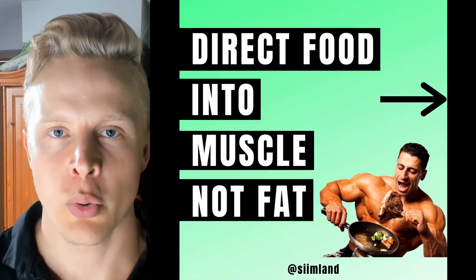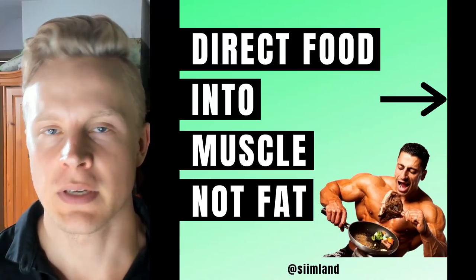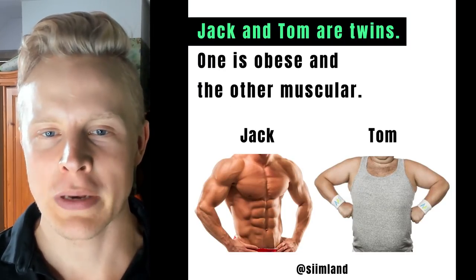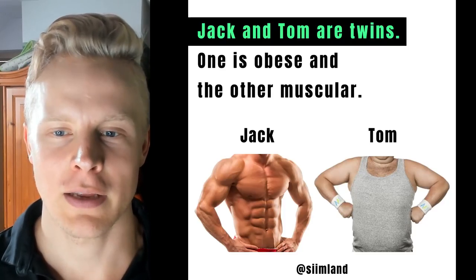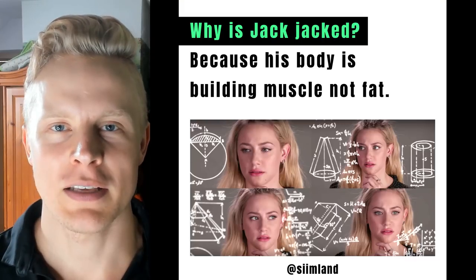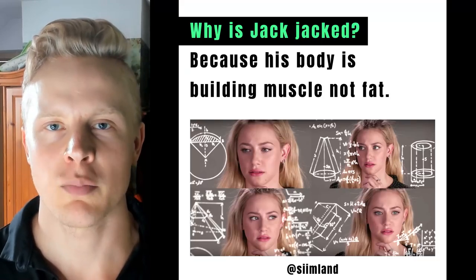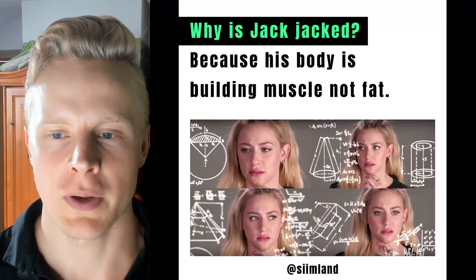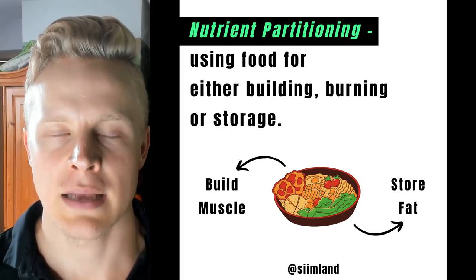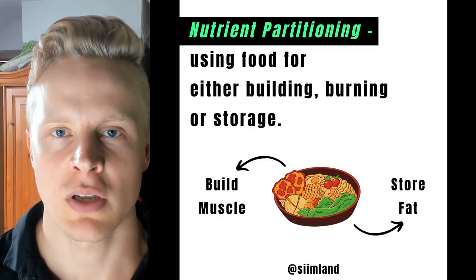The idea for this video came from my own Instagram post about nutrient partitioning — how do you direct your food into basically muscle and fitness instead of gaining fat. In the beginning, there's a story: it's Jack and Tom. They're twins. One of them is obese and the other one is muscular. Jack is jacked and Tom is a bit fatter. Why is Jack jacked? That's because his body is mostly building muscle instead of fat. This phenomenon is basically called nutrient partitioning — how does your body use the fuel that it has? Is it going to be used for fat storage, building muscle, or burning it off for energy?